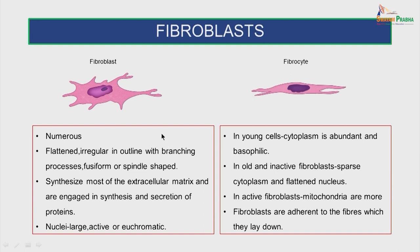A little more about the fibroblasts. They are numerous and are flattened, have irregular outline with branching processes, fusiform or spindle in shape. They synthesize most of the extracellular matrix and are engaged in synthesis and secretion of proteins. The nuclei are large, active or euchromatic. In young cells the cytoplasm is abundant and basophilic. In old and inactive fibroblasts, there is sparse cytoplasm and a flattened nucleus. In active fibroblasts, the mitochondria are more. The fibroblasts are adherent to the fibers which they lay down.